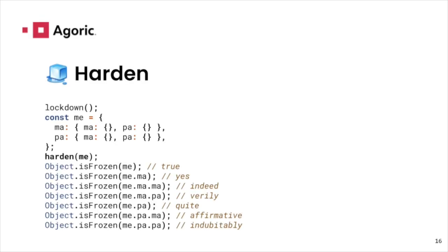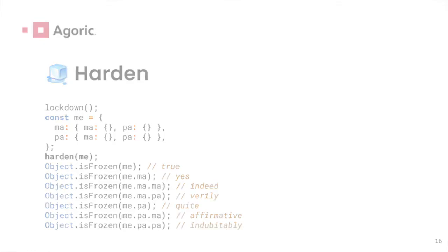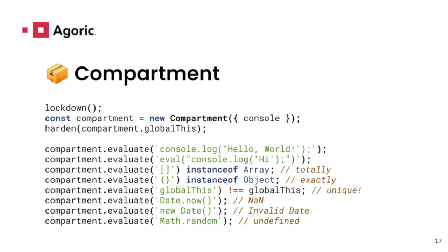The Harden function freezes an object and its transitive properties, rendering it, its prototype, and everything reachable from its surface tamper-proof. Lockdown reveals the Harden function so that programs can safely share their interfaces with strangers. Lockdown also prepares a compartment constructor that can run arbitrary programs in an environment that has a unique global this, eval, function, and compartment constructors that can evaluate programs with only the capabilities they have been explicitly granted.